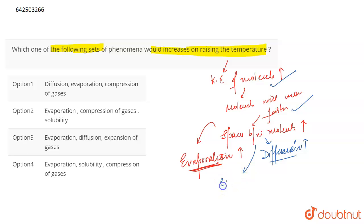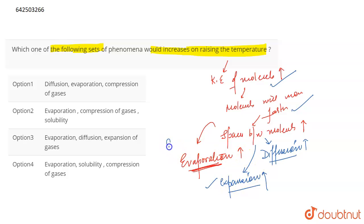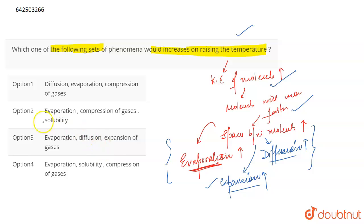Another phenomenon that can be affected is the expansion of gases. All the properties that gases have are more enhanced on increasing the temperature. As the kinetic energy of the molecules increases, expansion also increases because of the large spaces between the particles and the high speed of the particles. Diffusion, expansion — all the properties that gases usually possess are more enhanced on raising the temperature, so increasing the temperature favors the gaseous state and its properties.